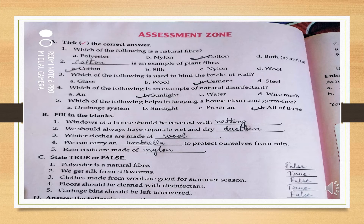Now question number two - fill in the blanks. Windows of a house should be covered with netting, or you can write fine mesh - either of the two you can write.